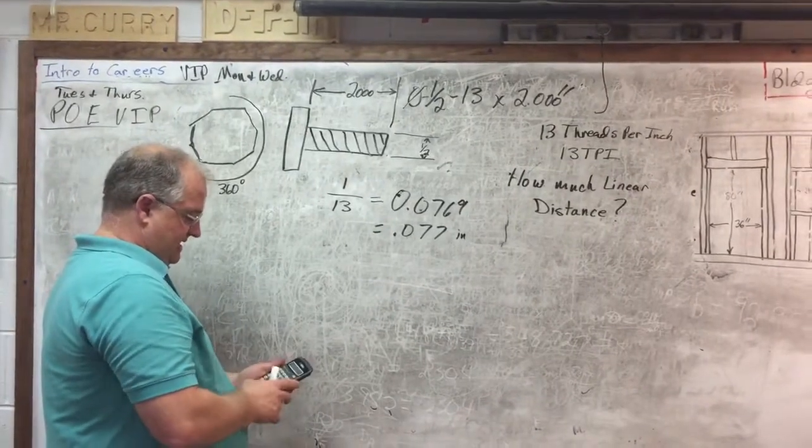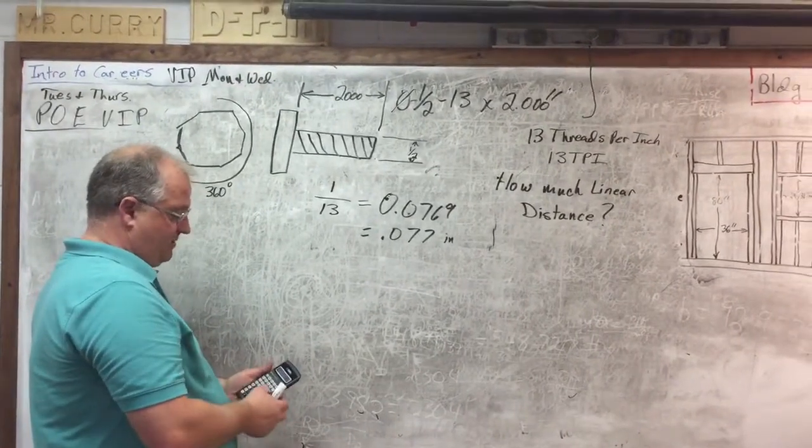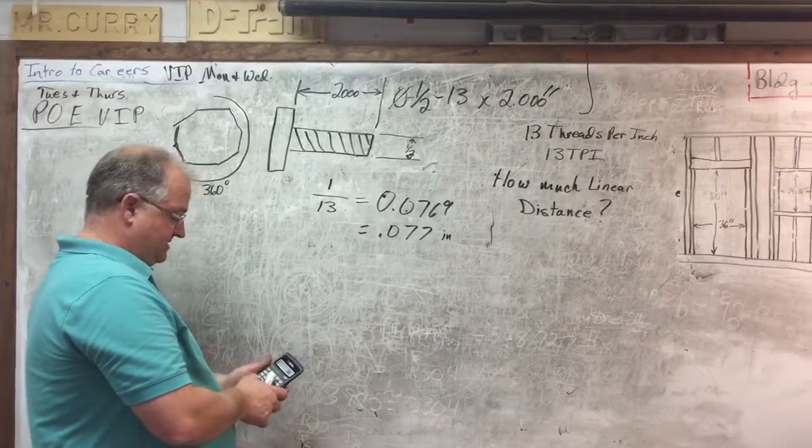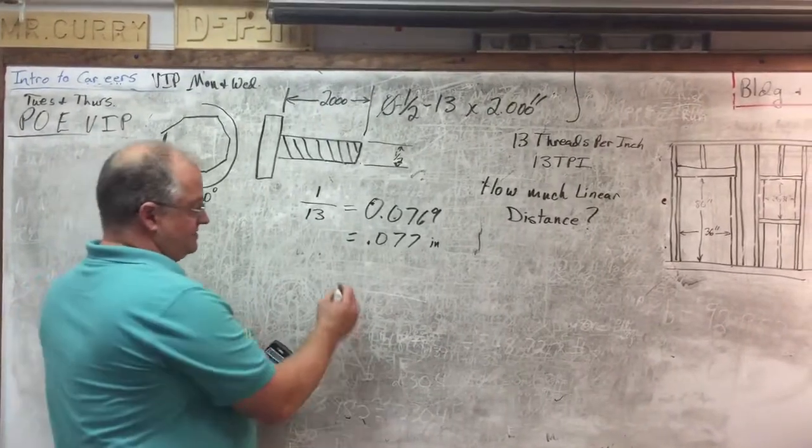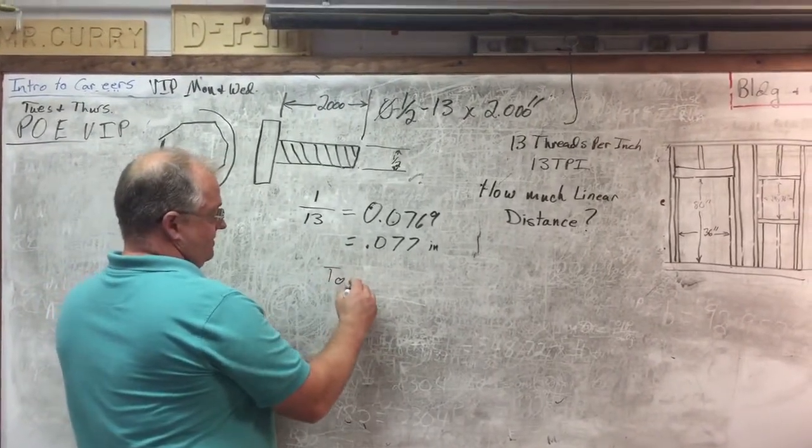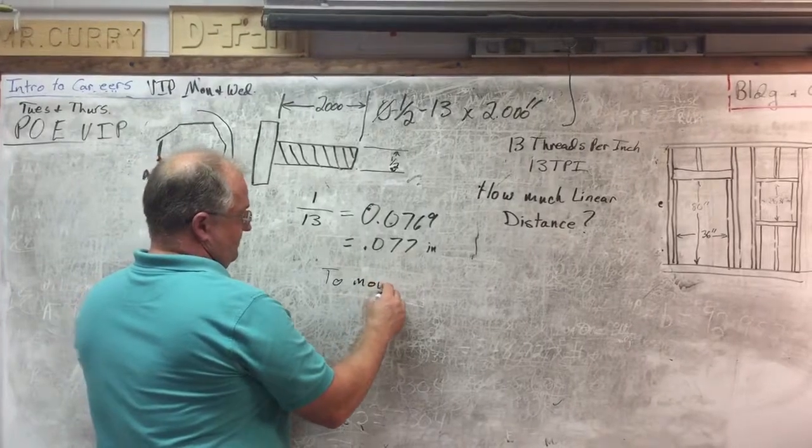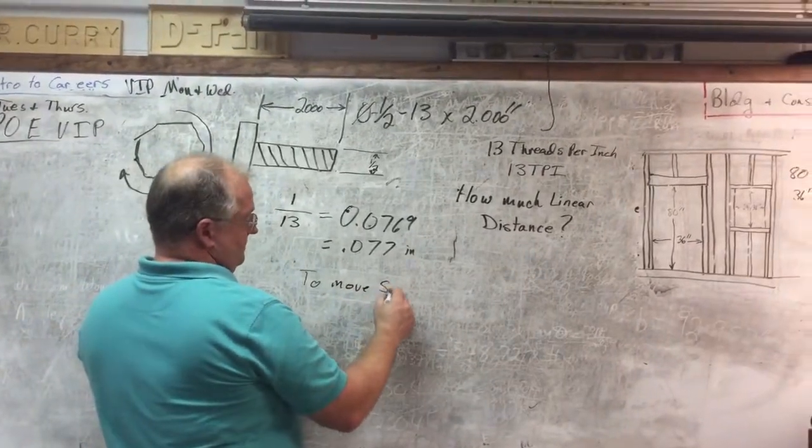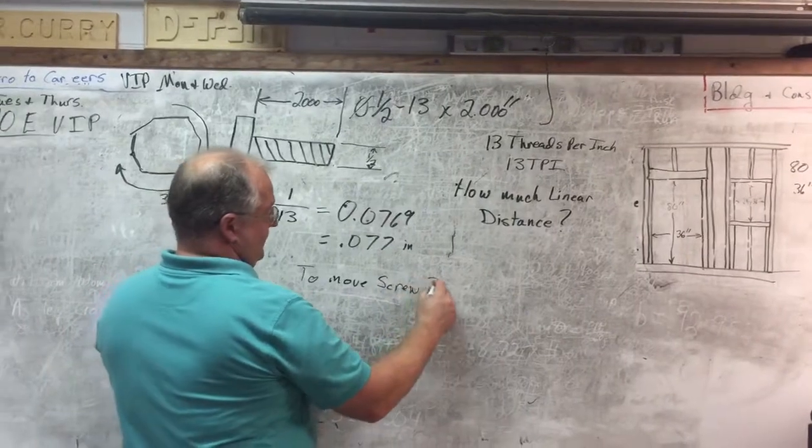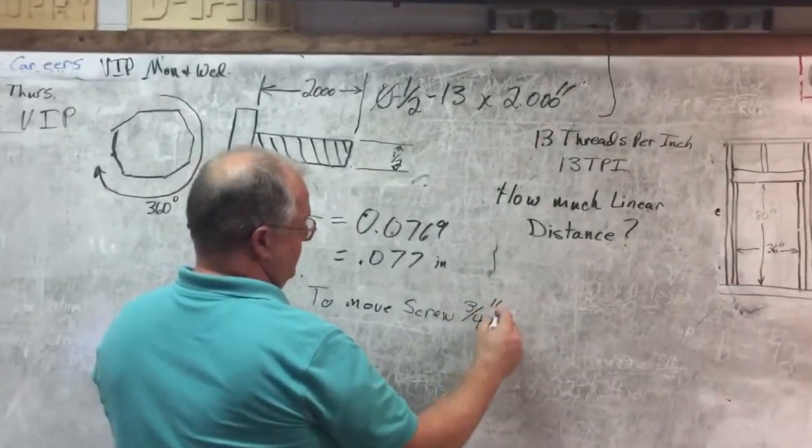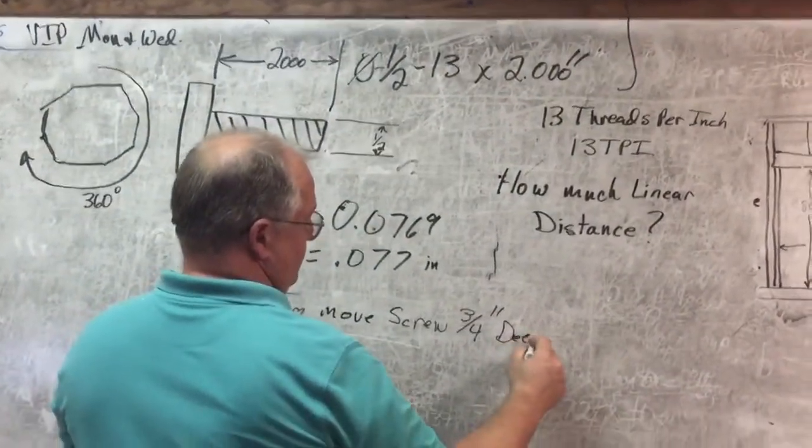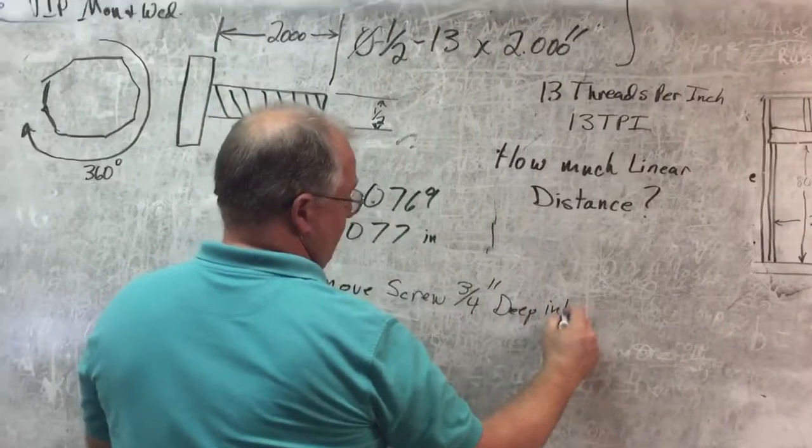well basically I'm going to divide three quarters by 0.077 to move the screw three quarters of an inch deep into a part that's mating with.